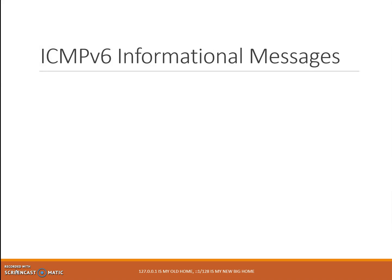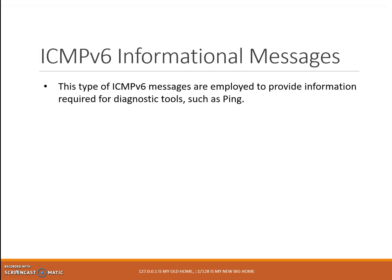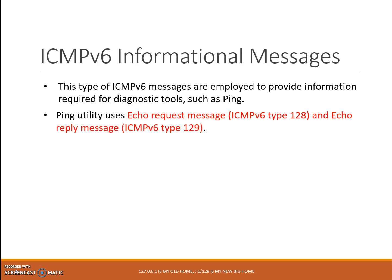The second type of ICMPv6 is informational messages. This type of ICMPv6 messages are employed to provide information required for diagnostic tools such as ping. They are used to help devices discover and share information with each other.